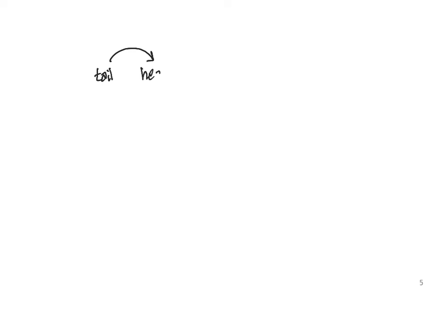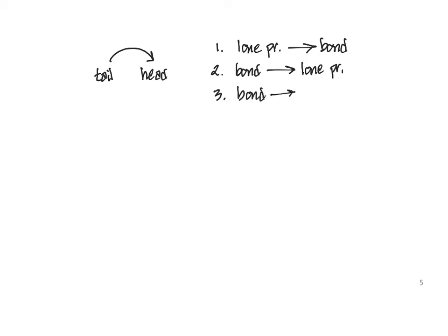We use the curved arrows to indicate movement of electrons, and the most important thing is where is the tail and where is the head. There are actually three possible scenarios for where curved arrows can go in a mechanism. One is that it originates at a lone pair and points to an atom to indicate the formation of a bond. The second is that the arrow can originate at a bond and point to an atom to indicate the formation of a lone pair. And finally, there is a scenario where the arrow begins at a bond and ends up forming a new bond.